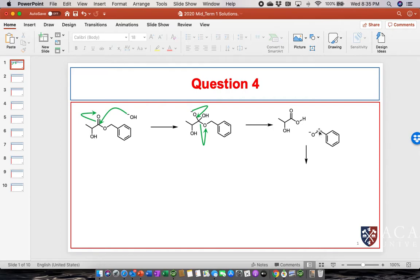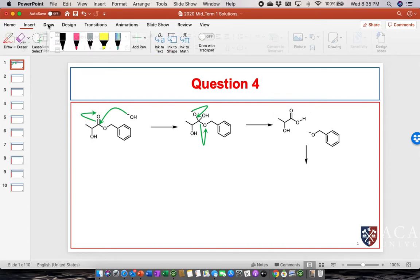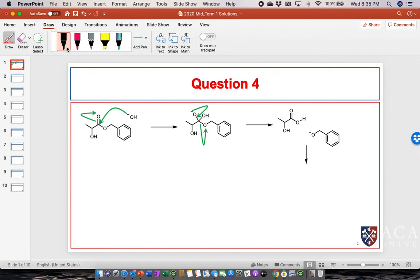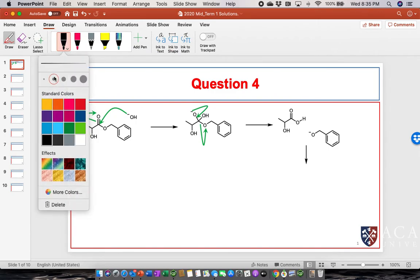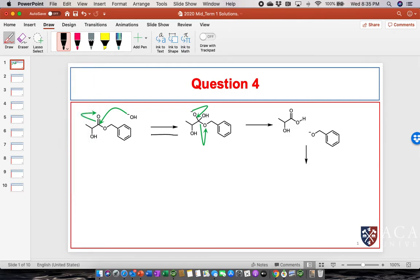We still have an alkoxide anion, but at the same time, we formed this carboxylic acid. So up until now, this reaction was very much reversible.